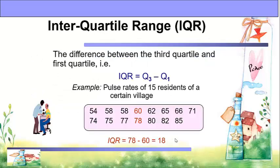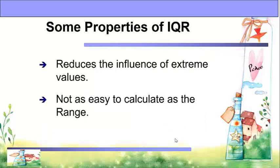The interquartile range is the difference between the third quartile and the first quartile — IQR equals Q3 minus Q1. Example: pulse rates of 15 residents of a certain village. The first quartile is 60 and the third quartile is 78, so 78 minus 60 equals 18. When we speak of quartiles, the distribution is divided into four equal parts. Some properties: it reduces the influence of extreme values, but it is not as easy to calculate as the range, because we still need to find the third and first quartiles.